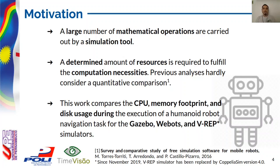Previous analyses hardly considered quantitative comparisons. In this work, we compared the CPU, memory footprint, and disk usage during the execution of a humanoid robot navigation task for the Gazebo, Webots, and VREP simulators. VREP, since November of 2019, has been replaced by CoppeliaSim version 4.0.